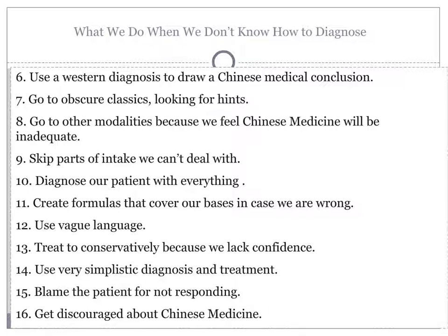Continuing on with what we do when we don't know how to diagnose. Number six: we use a Western diagnosis to draw a Chinese medical conclusion. Number seven: go to obscure classics looking for hints. Number eight: go to other modalities because we feel Chinese medicine will be inadequate. Number nine: skip parts of the intake we can't deal with. Number ten: diagnose our patient with everything.